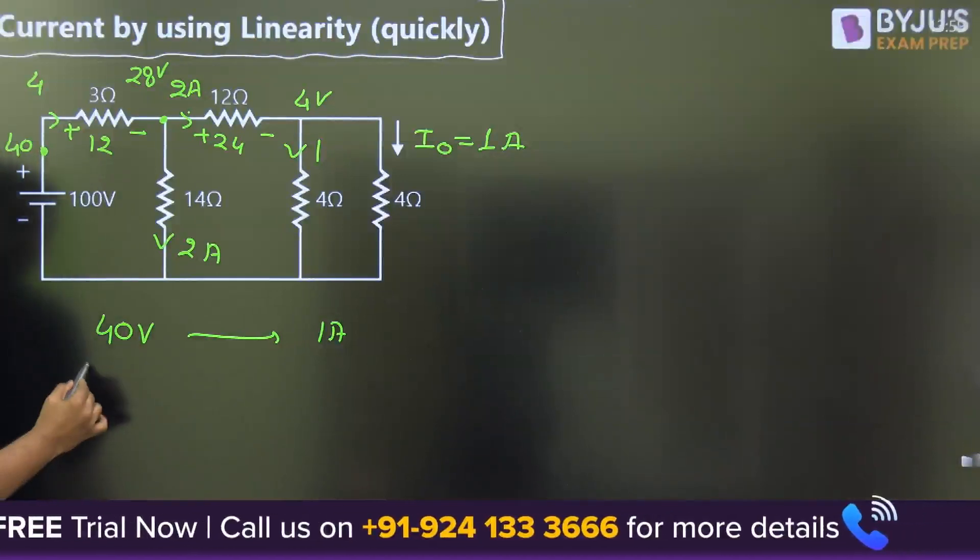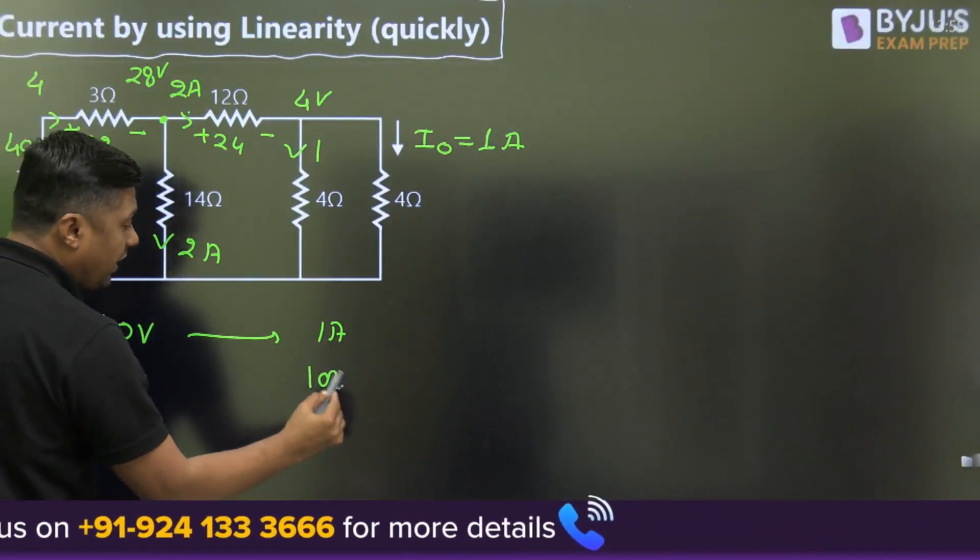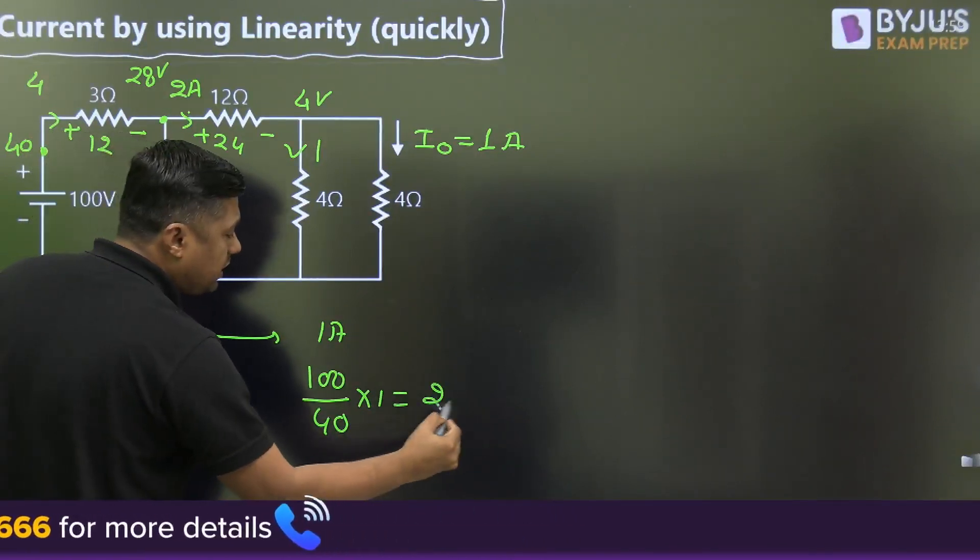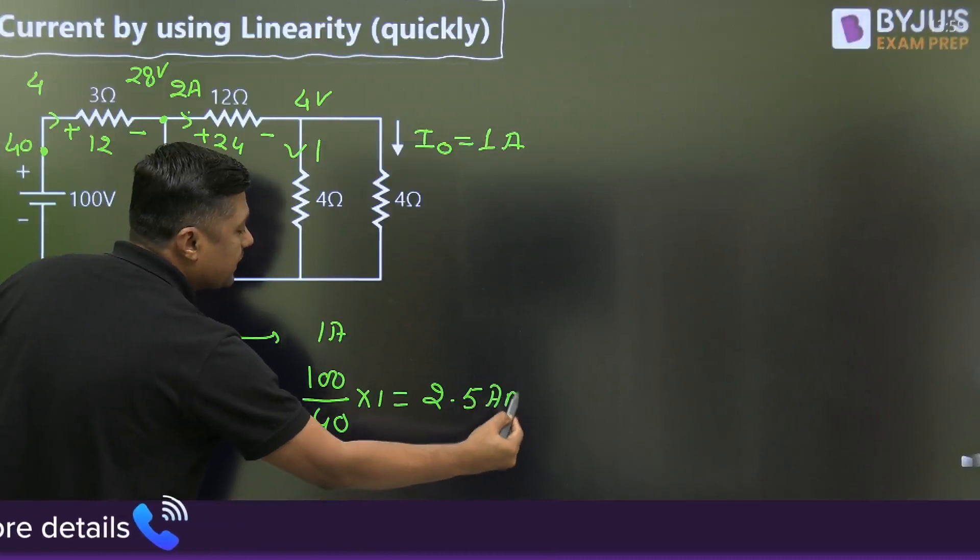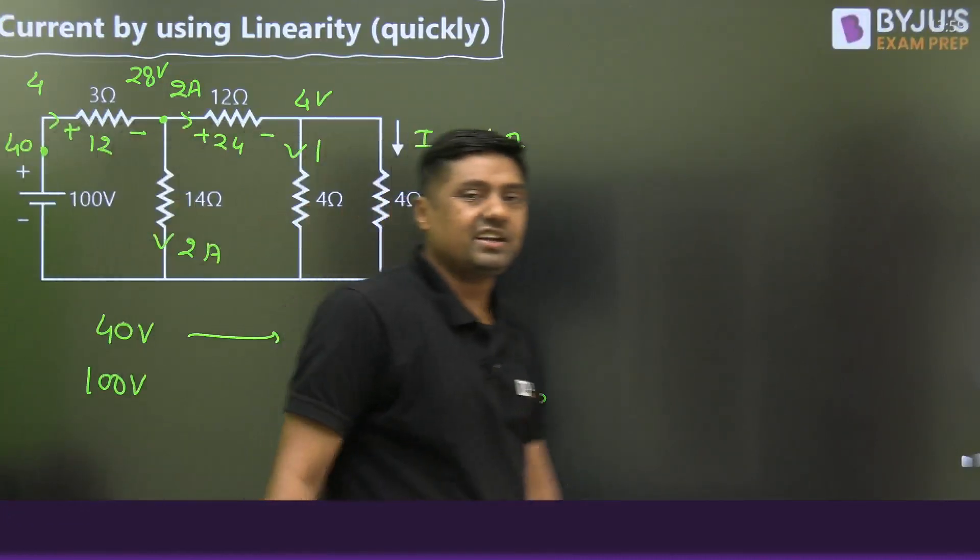If the voltage at this point is 100 volts, then what will be the current? 100 divided by 40 times 1, that is 2.5 amperes. That is the answer for this question. By using linearity, you can check by finding R equivalent - you will get the same answer.